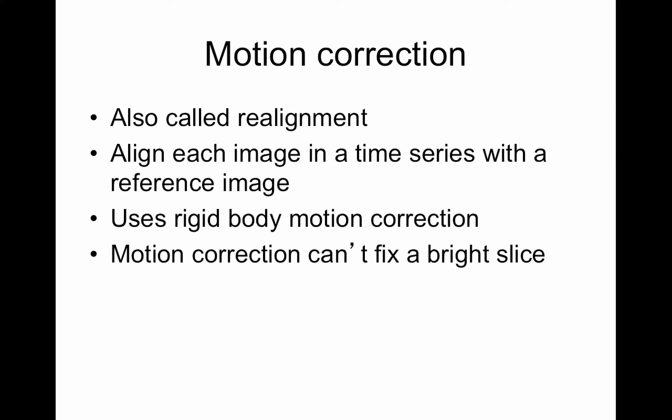Motion correction is not something that can be skipped. It's run using the McFlirt algorithm. I used to run it before my FEAT analysis but now I run it within the FEAT analysis, because previously I didn't have an option to add the extended motion parameters. This is also called realignment — you align each image in a time series with a reference image. This refers to the raw BOLD time series, not registering things to MNI space — that's later. Everything about the level one analysis is done in scanner space.